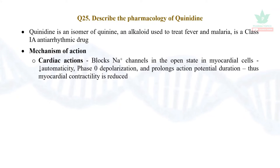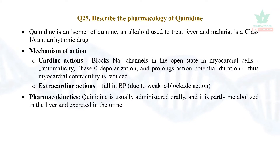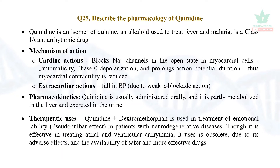The action potential duration is increased and myocardial contractility is reduced, meaning the heart beats at a slower rate. Extracardiac actions: it causes alpha blockade, so it causes a fall in blood pressure. It is orally absorbed, partially metabolized in the liver, and eliminated in urine.